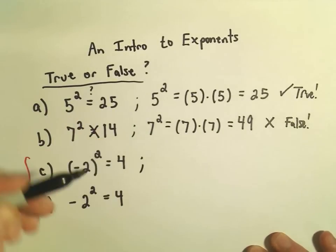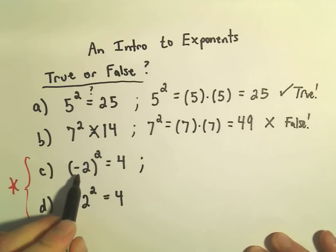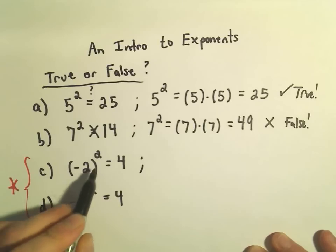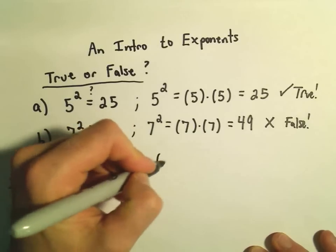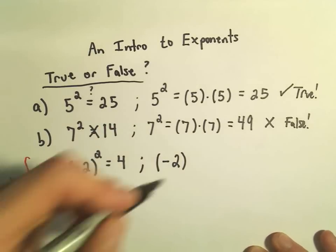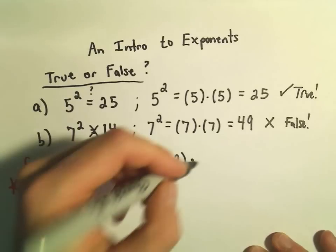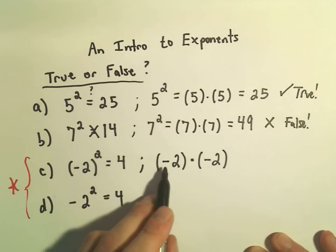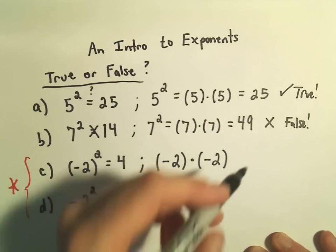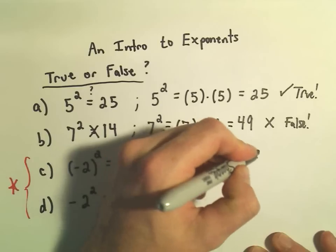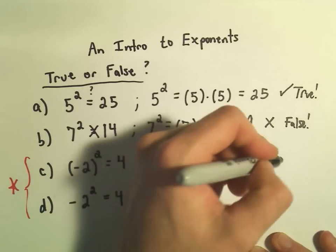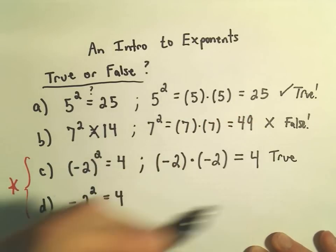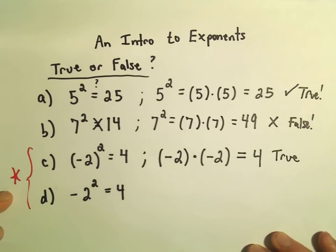We have the negative 2 all in parentheses. So the negative has been snared—it's trapped inside the parentheses, so it also gets squared. We're going to take negative 2, that's the thing inside the parentheses, and since the exponent is 2, we multiply negative 2 by negative 2. A negative times a negative is a positive, 2 times 2 gives us 4. So this original statement in Part C is definitely true.